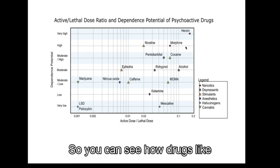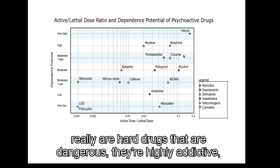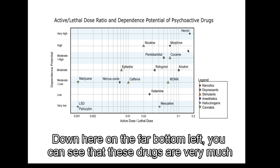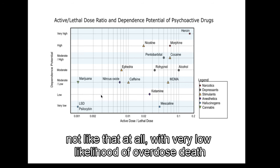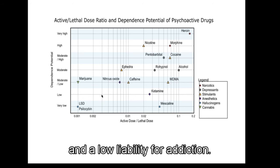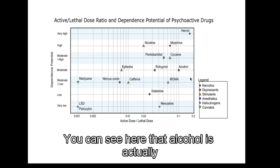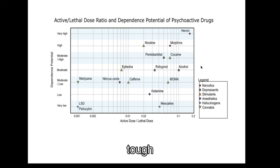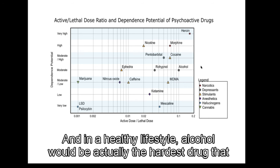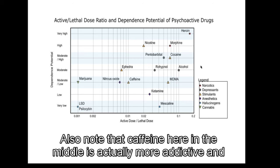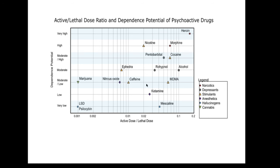You can see how drugs like heroin and cocaine really are hard drugs that are dangerous — they're highly addictive and they're highly likely to kill in an overdose. Down here on the far bottom left you can see that these drugs are very much not like that at all, with very low likelihood of overdose death and a low liability for addiction. Notice where alcohol is. You can see that alcohol is actually pretty tough as far as drugs go, and in a healthy lifestyle alcohol would actually be the hardest drug that you use.